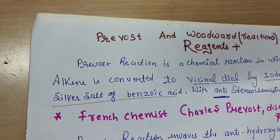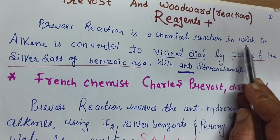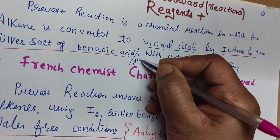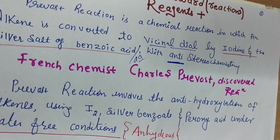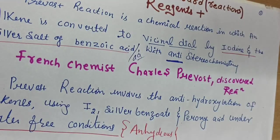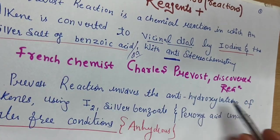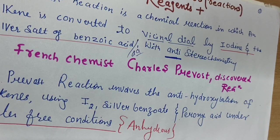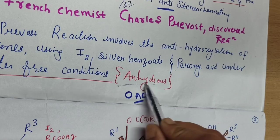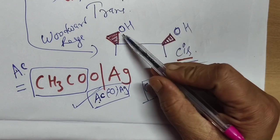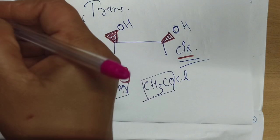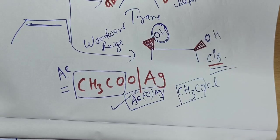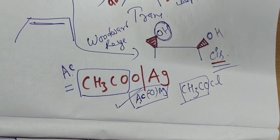The Prévost reaction is a chemical reaction in which an alkene is converted to vicinal diols by iodine and the silver salt of benzoic acid or acetic acid with anti-stereochemistry, meaning one OH will be below the plane and the other OH will be above the plane. The Prévost reaction was first given by French chemist Charles Prévost, and it involves anti-hydroxylation of alkenes using iodine and silver benzoate under water-free conditions. The important condition to note is that it is anhydrous. The addition of OH groups to alkenes is known as hydroxylation.